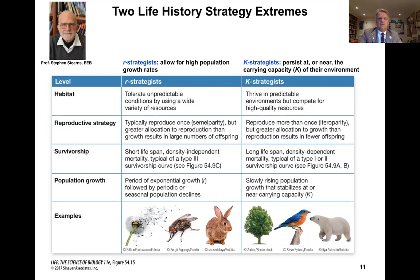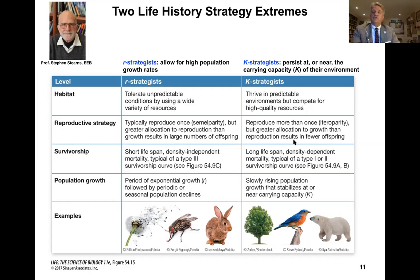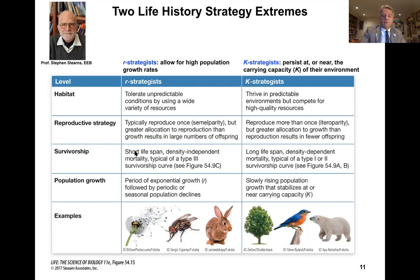R-strategists and K-strategists have different characteristics. R-strategists typically reproduce once, with a greater allocation to reproduction than growth, resulting in a large number of offspring. K-strategists reproduce more than once, giving greater allocation to growth than reproduction, resulting in fewer offspring. Regarding survivorship, R-strategists have shorter lifespans while K-strategists tend to have larger lifespans. R-strategists typically have a Type III survivorship curve.